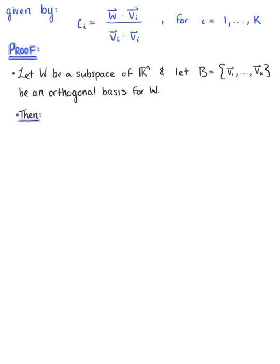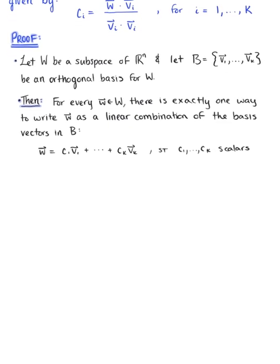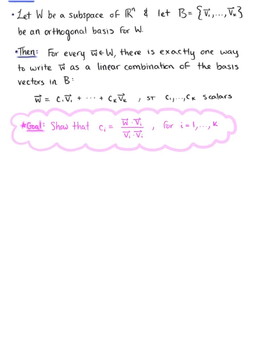Then by a previously established theorem, we know that for all vector w in the subspace W, there is exactly one way to write vector w as a linear combination of the basis vectors. So our goal here is to show that the arbitrary scalar c sub i is equal to the ratio of vector w dotted with the arbitrary vector v sub i, divided by the dot product of vector v sub i with itself.